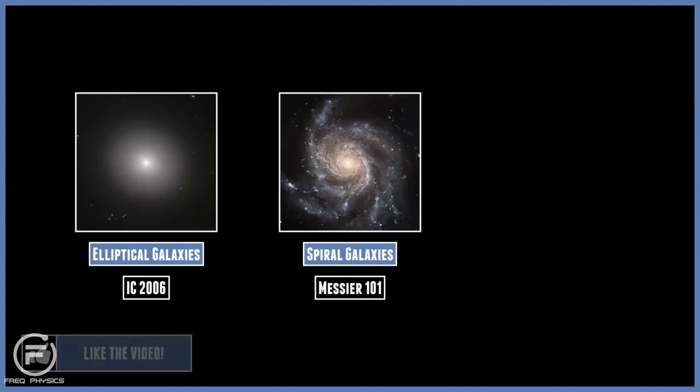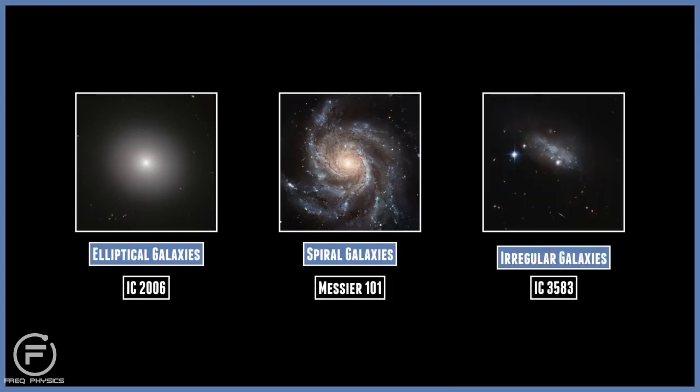The Hubble system is basically divided into three categories. We've got the elliptical galaxies, which are relatively featureless spherical. The other one is the spiral galaxies, and these have very distinctive arms that spiral out from their centers. And finally we have the irregular galaxies. This is basically any other galaxy that doesn't seem to fit into the ellipticals or spirals.